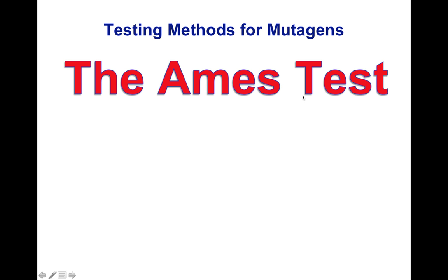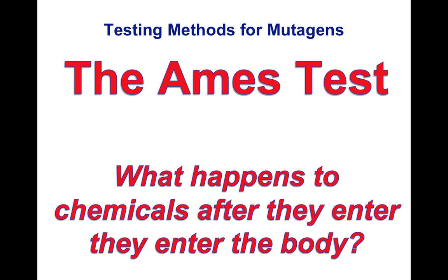There's a testing method for mutagens called the AIMS test. The AIMS test was designed by Bruce AIMS to determine what happens to chemicals after they enter your body. Many times, a substance, if you test it for mutagenicity in a lab all by itself, it will not cause mutations. However, Bruce AIMS, in his lab in the 1970s, recognized that when you ingest chemicals or they enter your body through various ways from the environment, your own body will try to detoxify those chemicals by changing them. And sometimes, that process of trying to change those chemicals into something less toxic turns them into something more toxic. The organ responsible for doing that is mostly the liver.